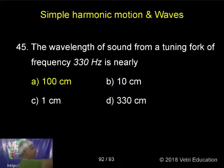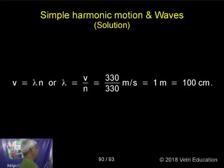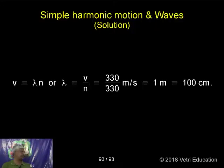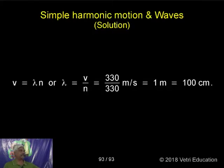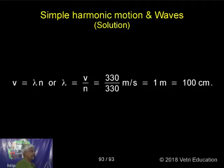What is the relation between frequency and wavelength? We know V is equal to lambda times n, or lambda is equal to V by n. So V we take as 330, giving 330 by 330, which equals 1 meter or 100 centimeters. So roundabout we can take V is equal to n lambda.